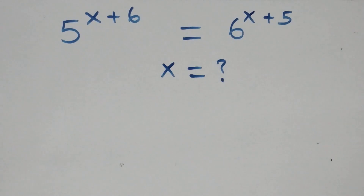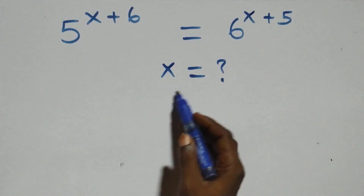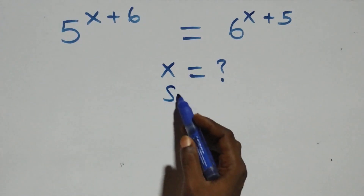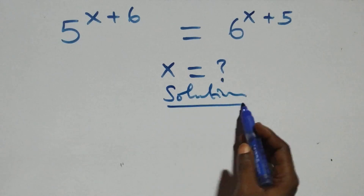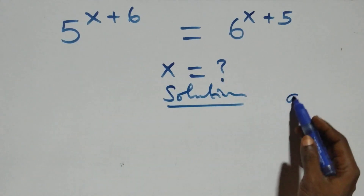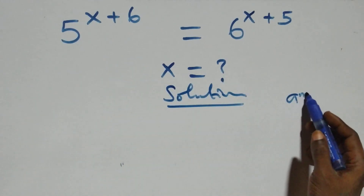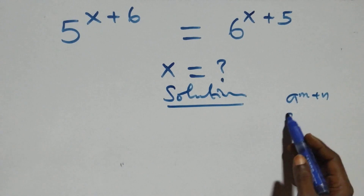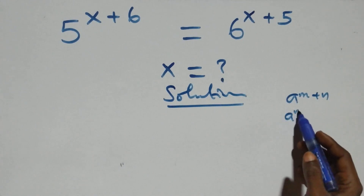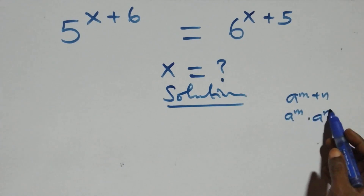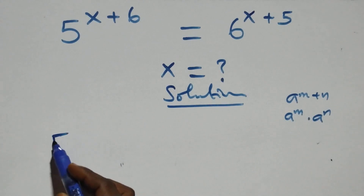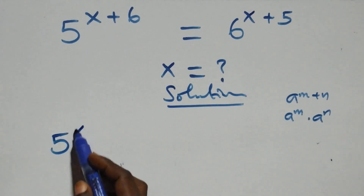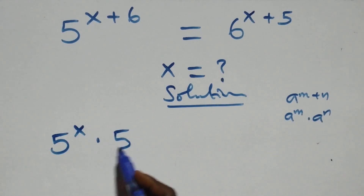Hello, you are welcome. How to solve this nice exponential equation. We have the rule where a raised to power m plus n equals a raised to power m times a raised to power n. That is, here we can write this as 5 raised to power x times 5 raised to power 6.